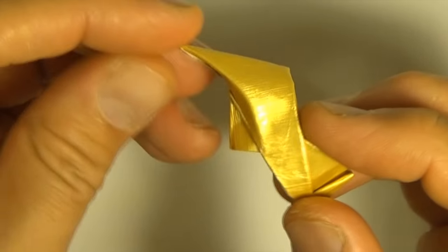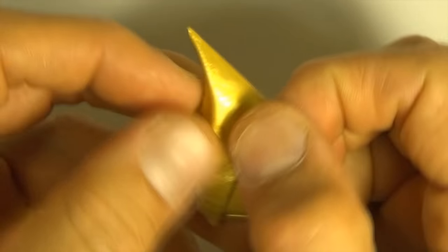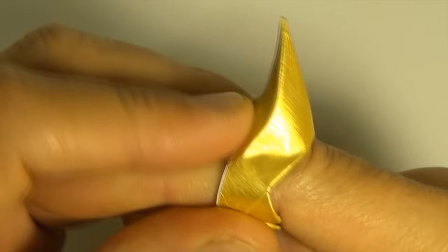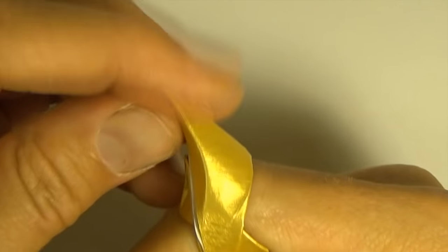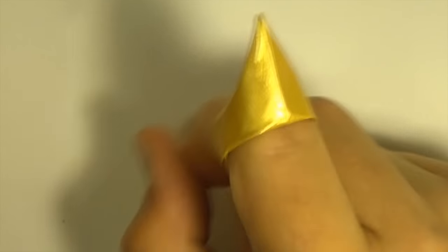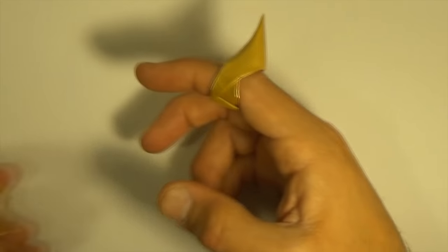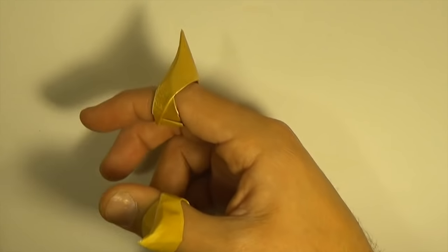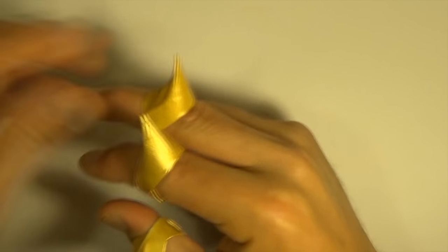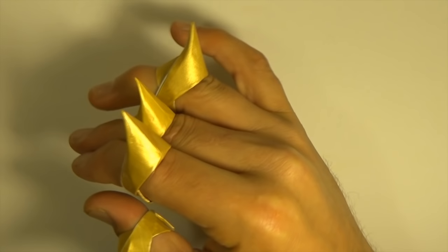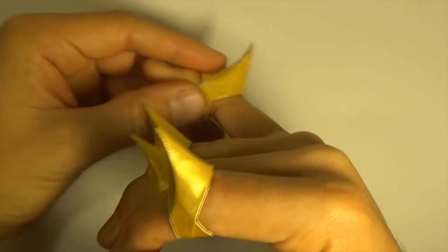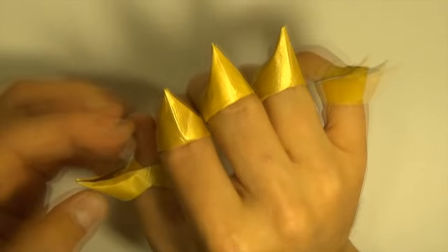And now it looks pretty awesome. Check that out, the spiked knuckle ring. And that's it. And now you just need to make one for each of the other fingers. And there it is.